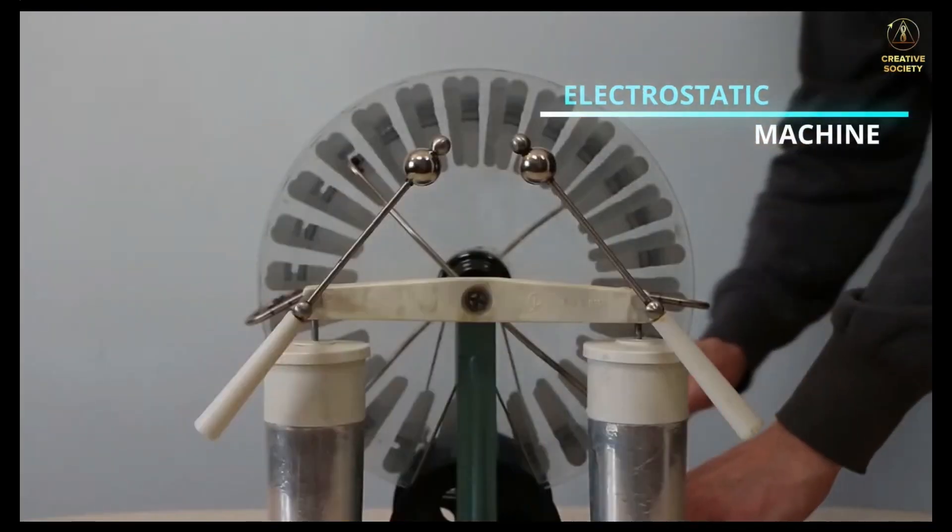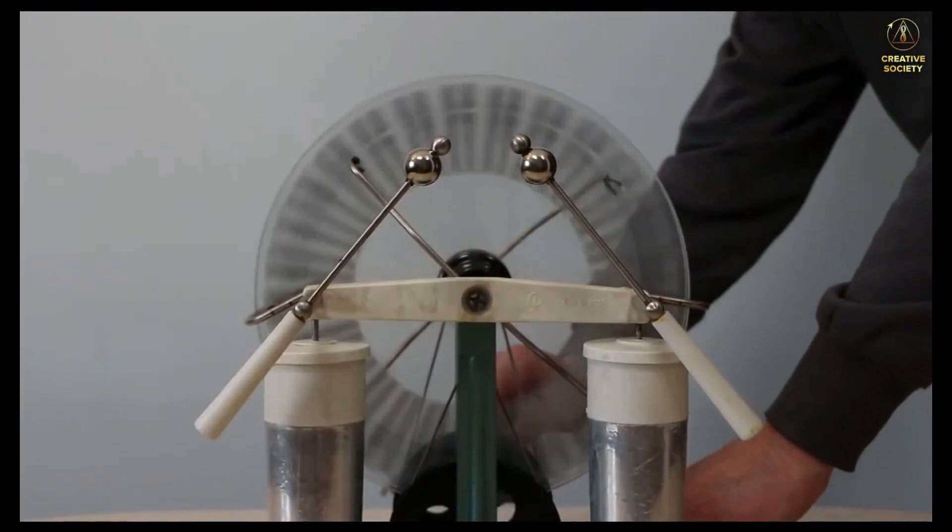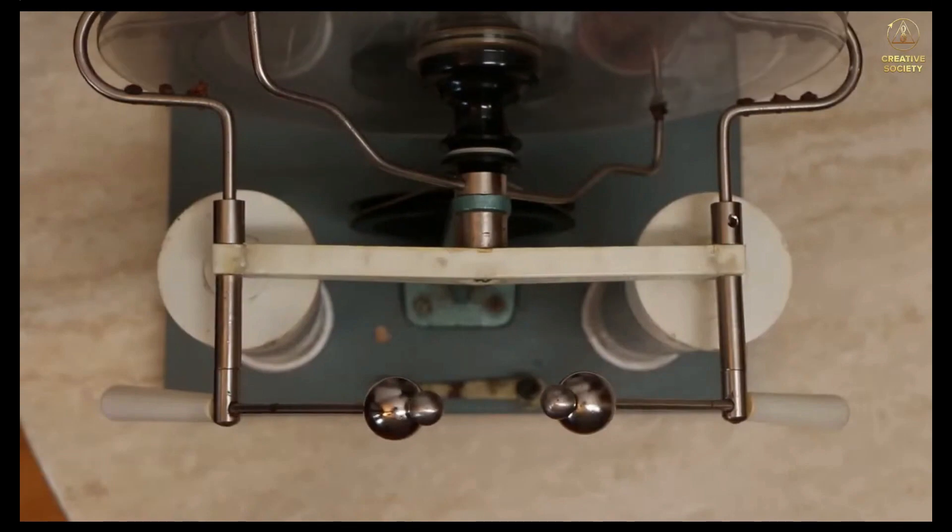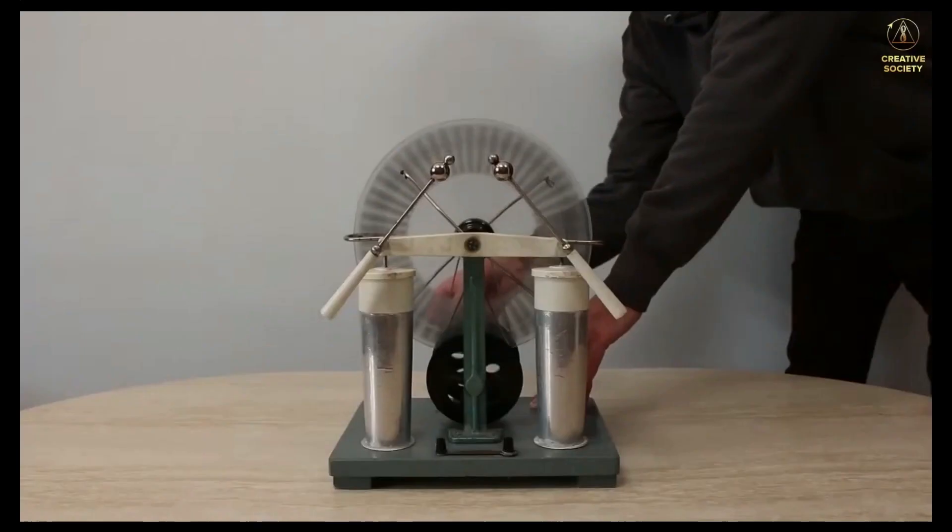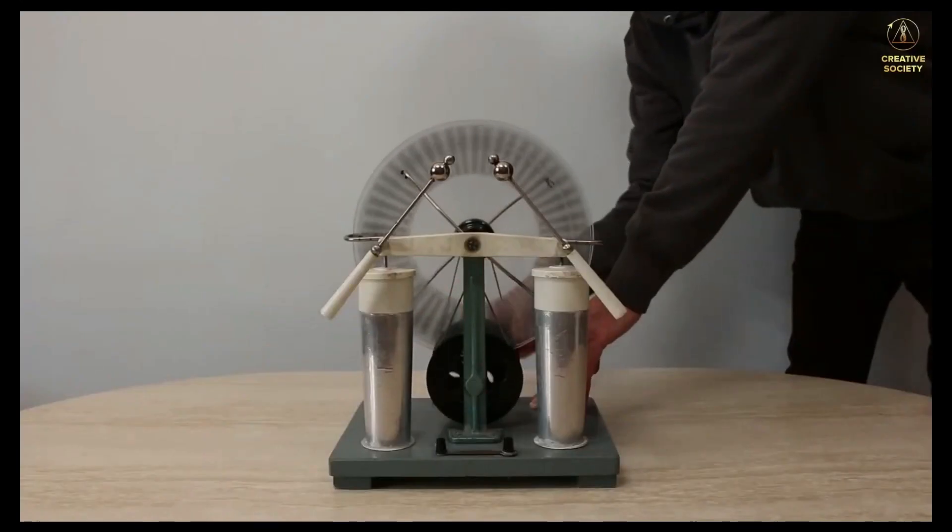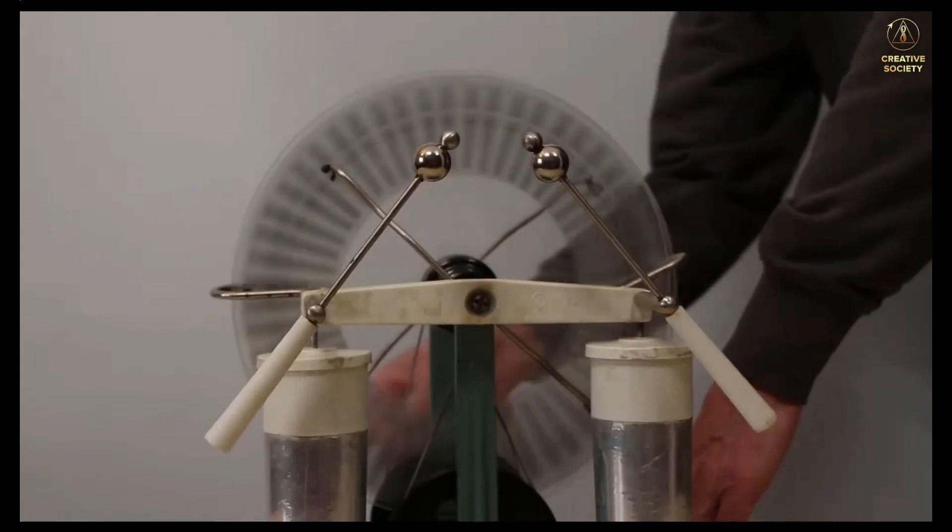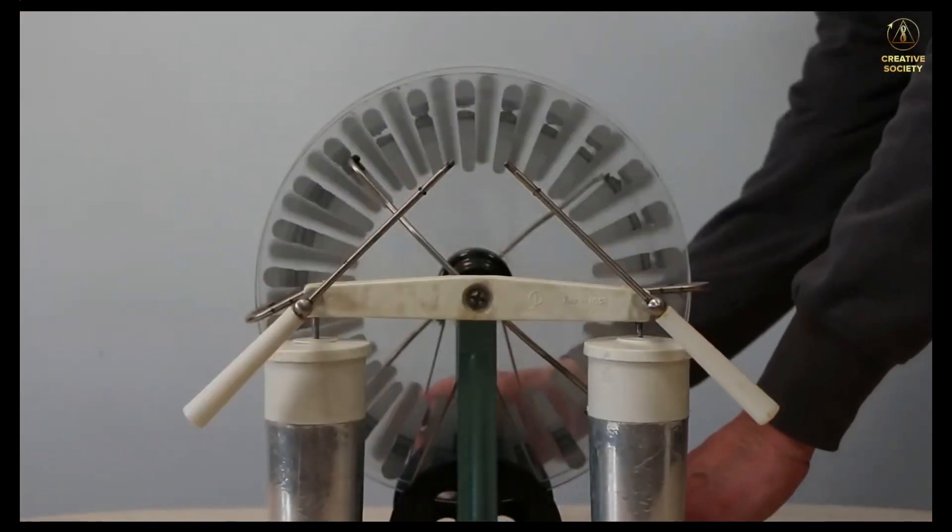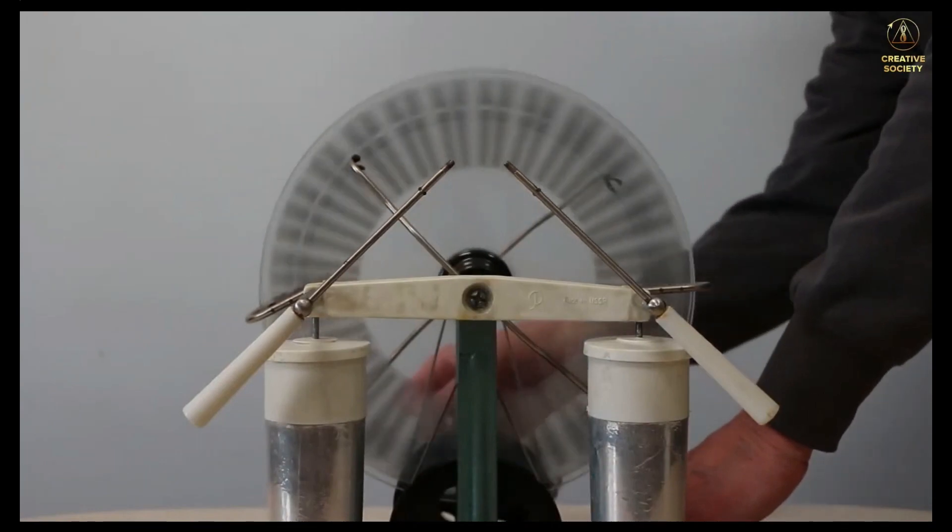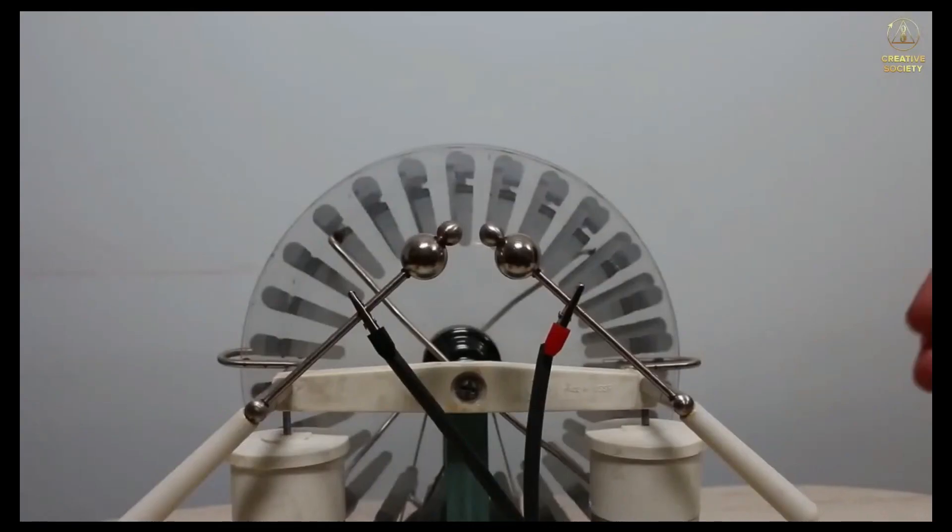For example, let's take an electrostatic machine. There is a paradox associated with it, which is an unsolvable riddle. When the discs of an electrostatic machine are rotated, a powerful spark between the two electrodes occurs only when there are metal spheres attached to their ends. If these spheres are removed, there will be no spark between the electrodes, or it will be barely noticeable. But if, for comparison, a device that works from a battery or a household outlet is connected to the electrodes of an electrostatic machine, an equally strong spark appears both with and without the spheres.